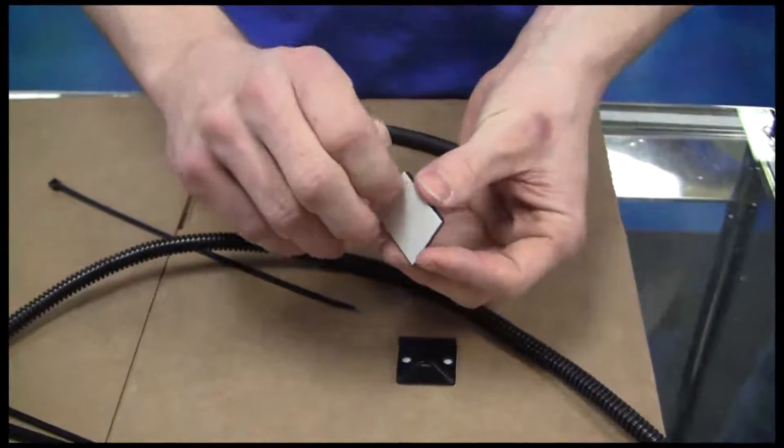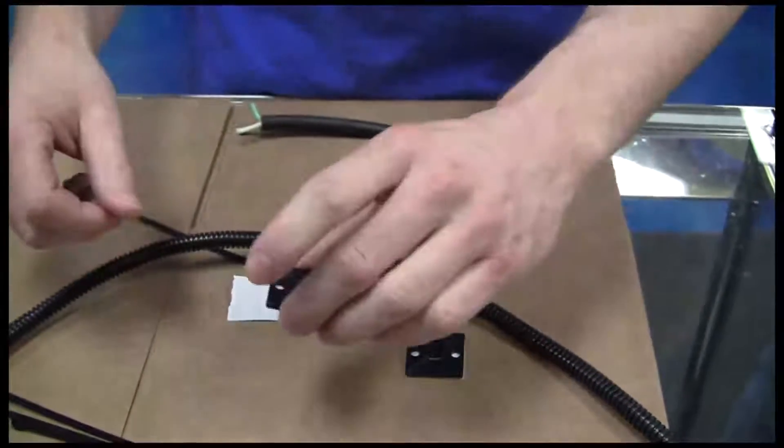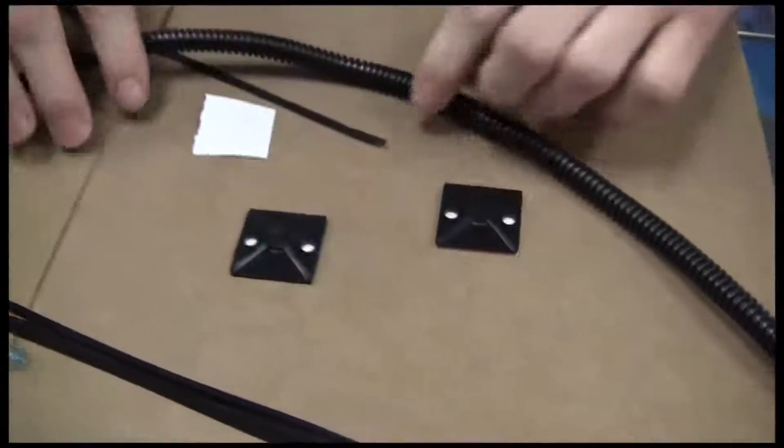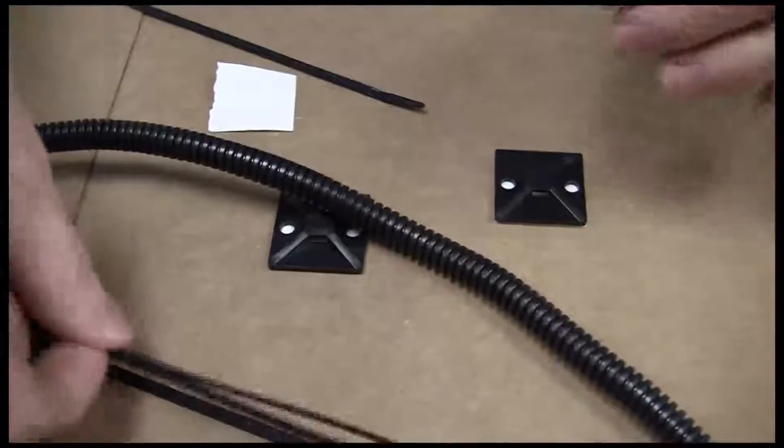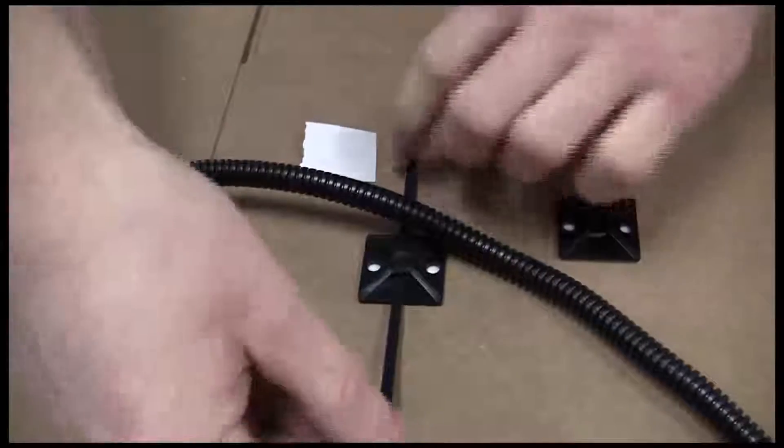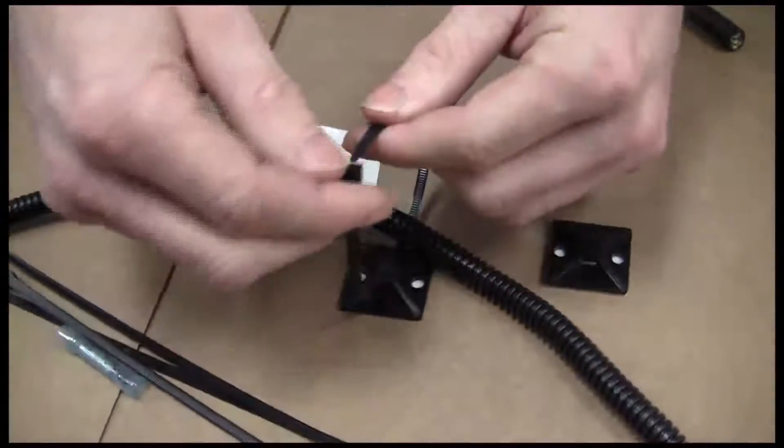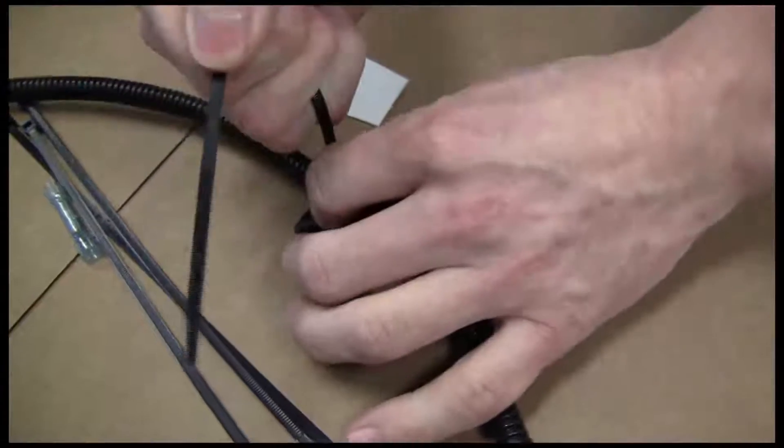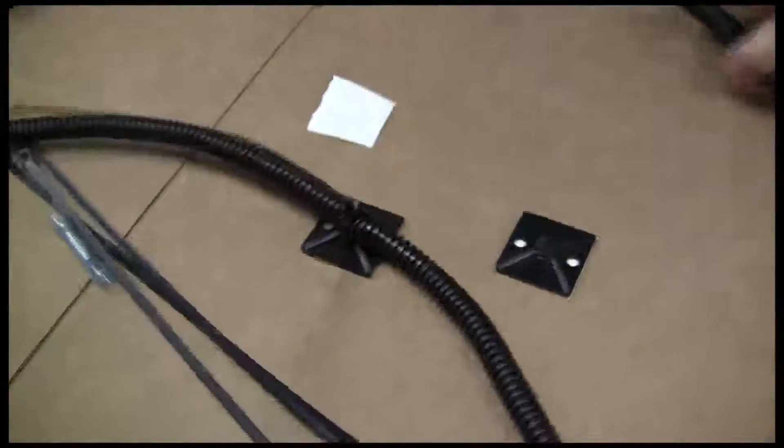These just peel off and you can tape them to the back of a panel and stick them on there. They're made for these zip ties here. They just go right through, then you tighten the zip tie down, just like that.